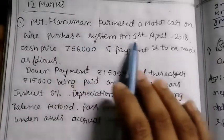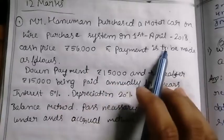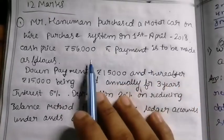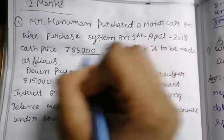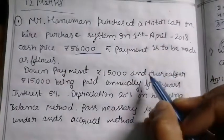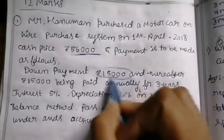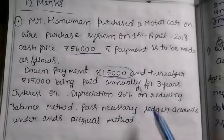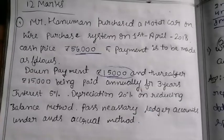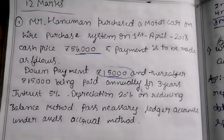First question: Mr. Adaman purchased a motor car on a hire purchase system on 1st April 2018. Cash price is ₹56,000. Payment is made as follows: down payment is ₹15,000, and thereafter ₹15,000 annually for 3 years.